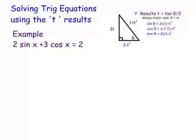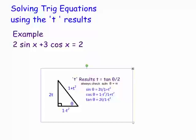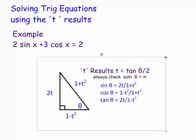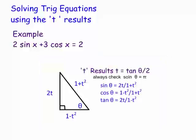These are the results — they come from the double angle results. Sine θ equals 2t over (1 + t²), cos θ equals (1 − t²) over (1 + t²), and tan θ equals 2t over (1 − t²), where θ is the angle. In this case x is our angle, so we're going to replace sine x with 2t over (1 + t²), etc.